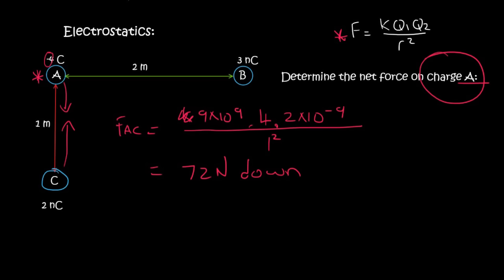Now we're going to look at the force of B on A. So we'll say F_AB. That's going to be equal to 9 times 10 to the 9 times by A is 4. B is 3 times 10 to the minus 9. The distance between them is 2. And please remember to square. And that'll give us 27 newtons.